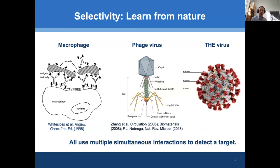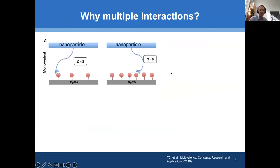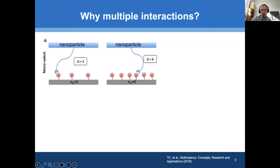But that's not the only reason why nature uses multiple simultaneous interactions. There is another very important reason: selectivity. Looking at simple statistical mechanics — if we have a nanoparticle with a single ligand, and a portion of the membrane with three receptors, that single ligand can bind to any of the three receptors, so it has three bound states. If we increase the receptor density by a factor of two, now we have six possible states — the number of states increased by a factor of two for a monovalent nanoparticle.